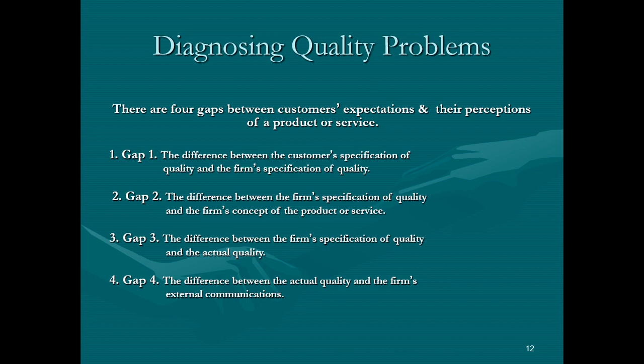The second gap is between the firm's specification — the product design — and the firm's concept of the product or service, meaning the main objective the product is designed for. For example, if the firm's concept is a low-cost product but the product design includes a huge number of features requiring higher cost, this conflict between both creates a quality problem.